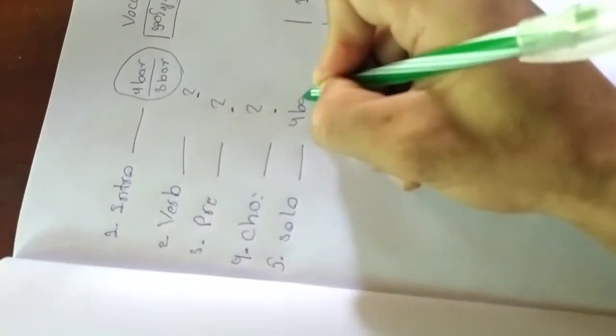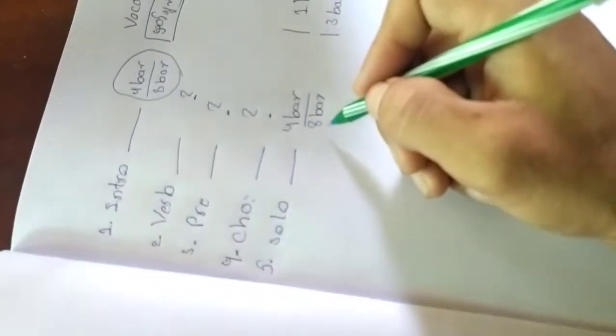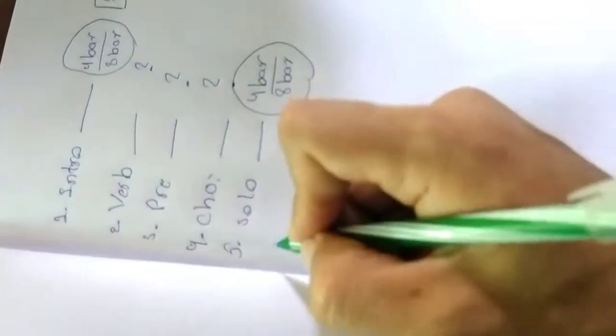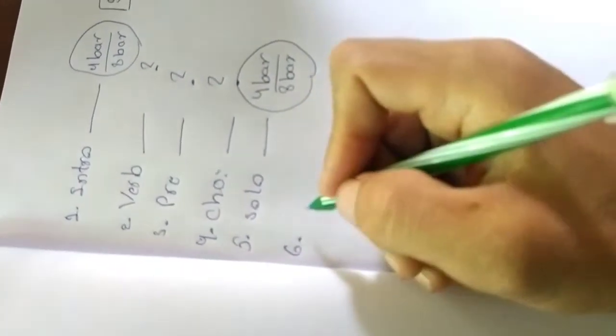This chorus is the chorus. This is 4 bars, 1 bars, and 1 bars. Then we will see the next one. Number 3. Number 3 is the last one.